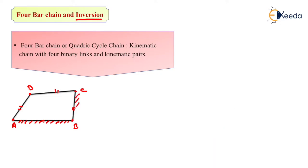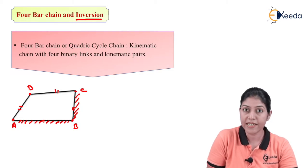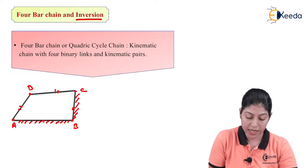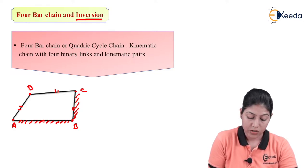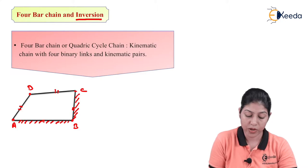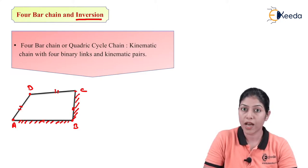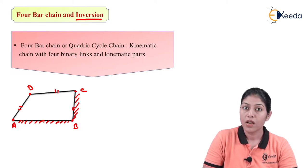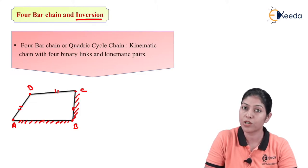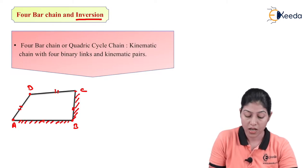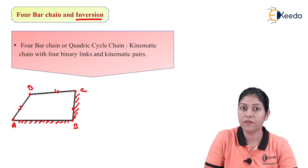For example, if we are fixing the BC link and AB link, so more than one link is fixed. This particular mechanism will convert into an inversion to define other types of mechanisms for transmission of motion. The motion can be transmitted from rotary motion to reciprocating motion, or rotary motion to oscillating motion, or vice versa. This inversion is used to define two different types of mechanisms.